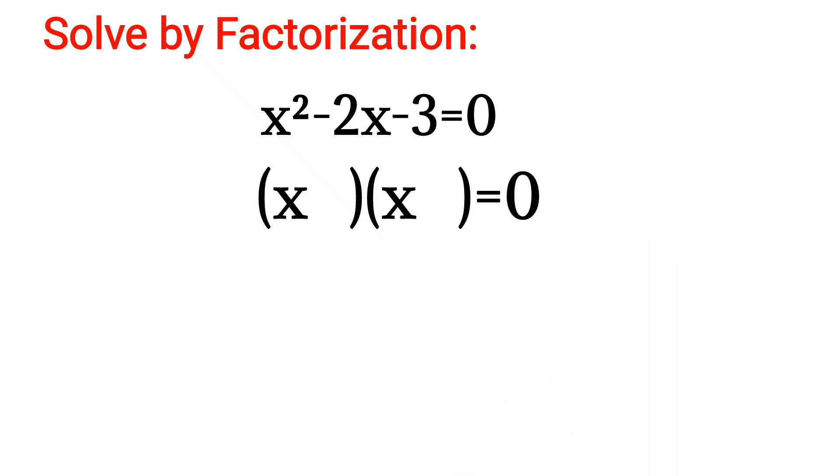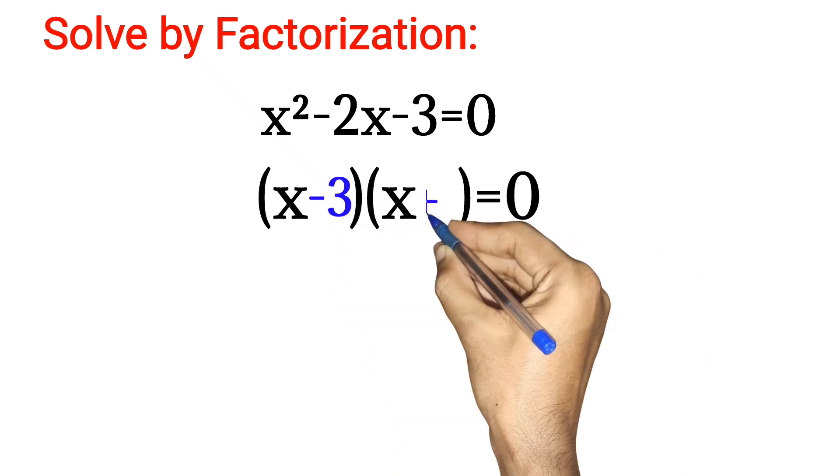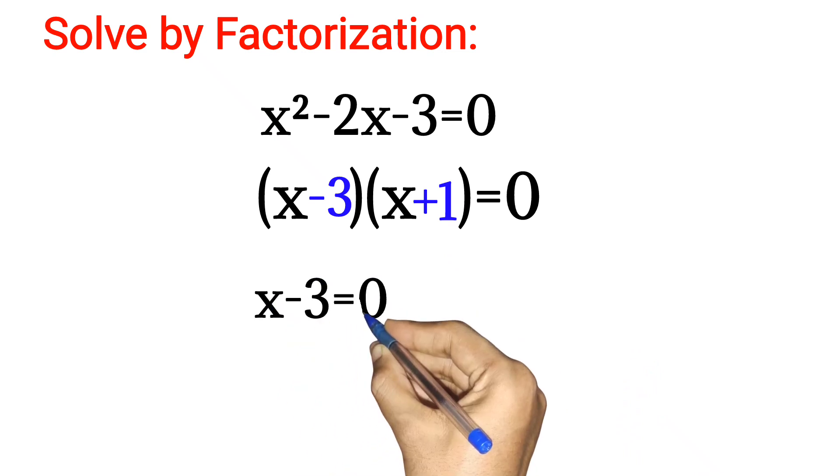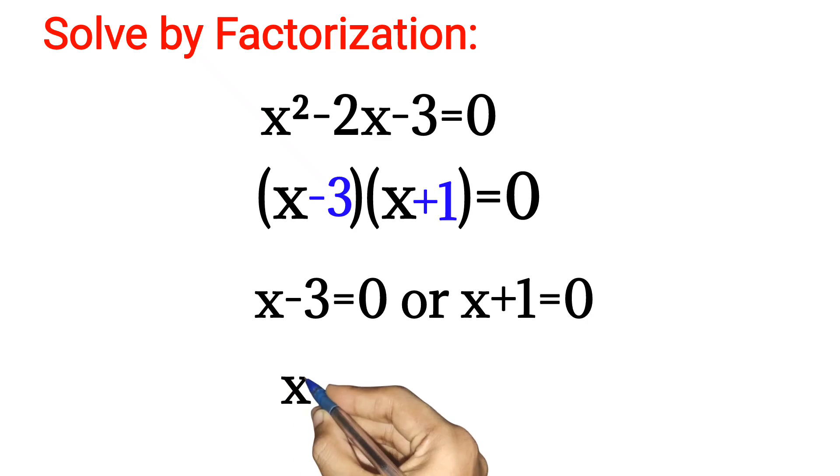two numbers so that when you multiply you have -3, when you add you have -2. And as you all know, the two numbers are -3 and +1. So from here, you know that x - 3 = 0 or x + 1 = 0. x = 3 or x = -1.